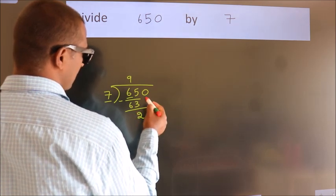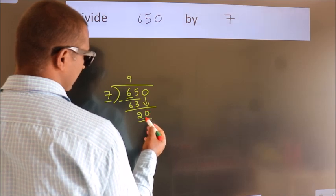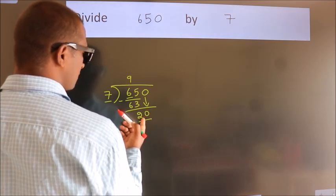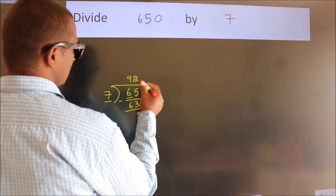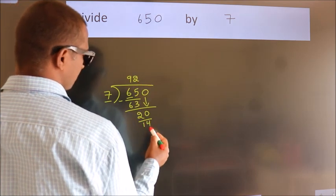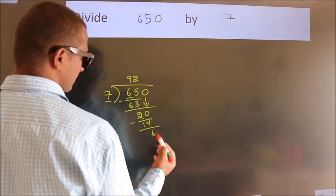After this, bring down the beside number. So 0 down. So 20. A number close to 20 in 7 table is 7 twos 14. Now we subtract. We get 6.